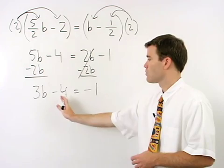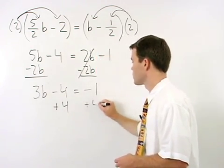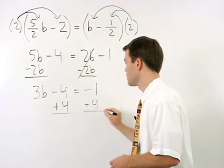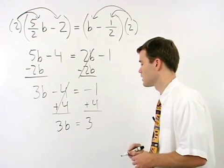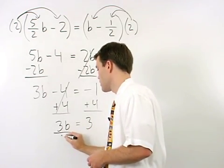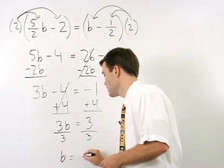Now we can move our numbers to the right by adding 4 to both sides, and we get 3b equals 3. Divide both sides by 3, and b equals 1.